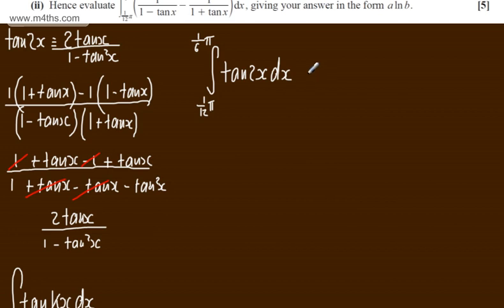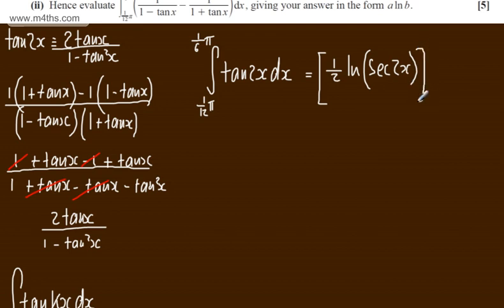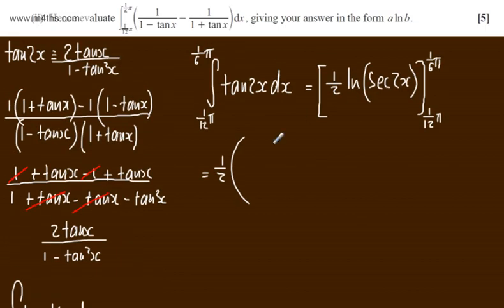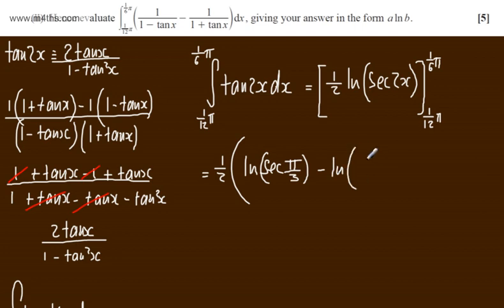Applying the standard result, this equals one-half times the natural log of sec(2x), evaluated from pi by 12 to pi by 6. Substituting in: we get one-half times [the natural log of sec(pi by 3) minus the natural log of sec(pi by 6)], since 2 times pi by 6 is pi by 3.